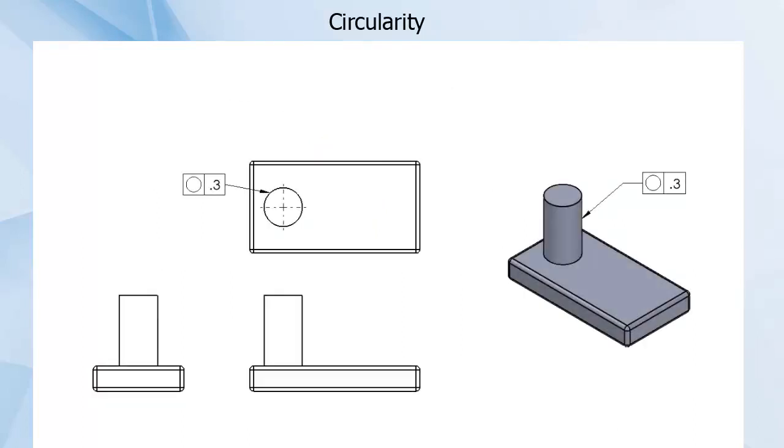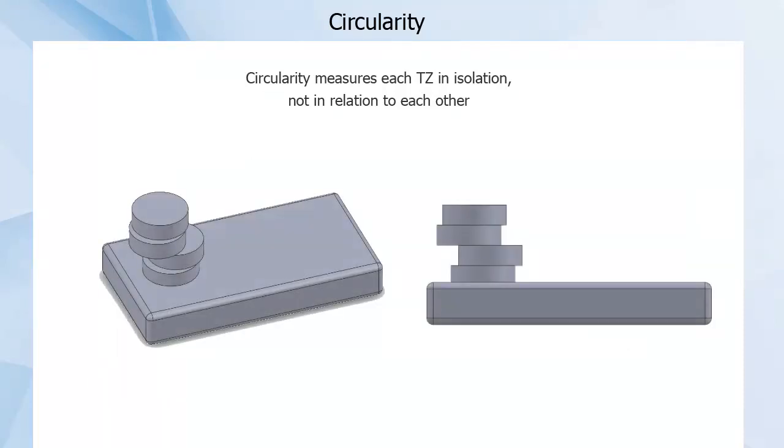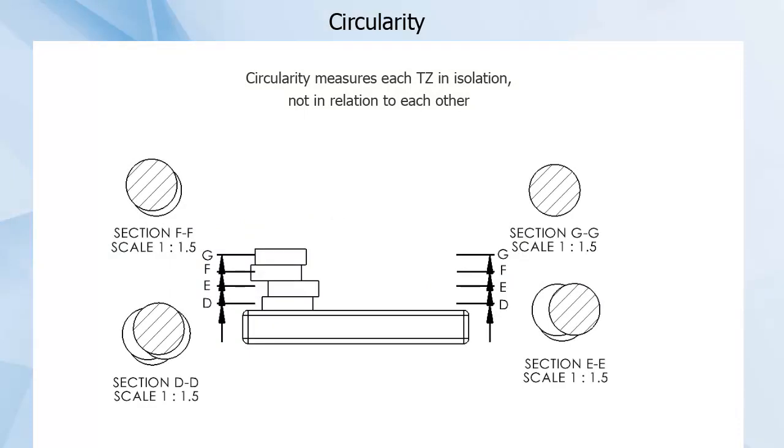The second limitation is that circularity, as a form of control, is measuring the roundness of a cross-section not in relation to anything else. This means your cylinder could have been terribly assembled like a stack of discs and still pass inspection. Each cross-section of this strange pin is circular to spec, even though this pin clearly does not look like the intended drawing.